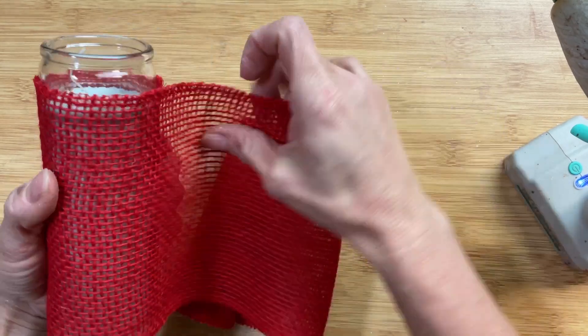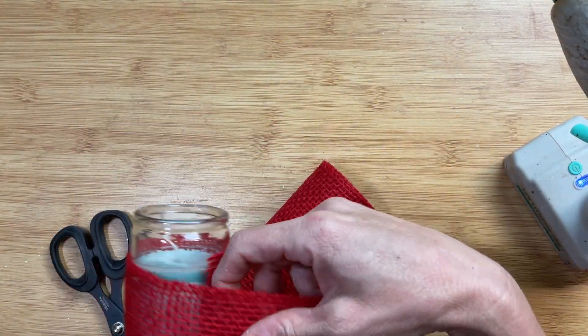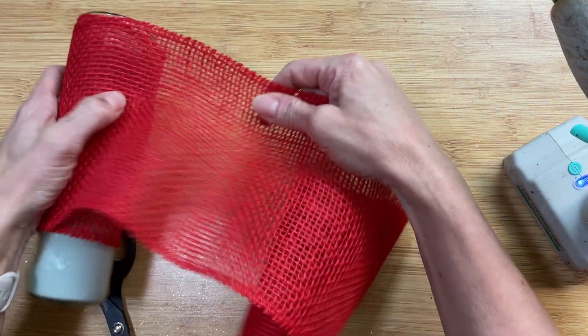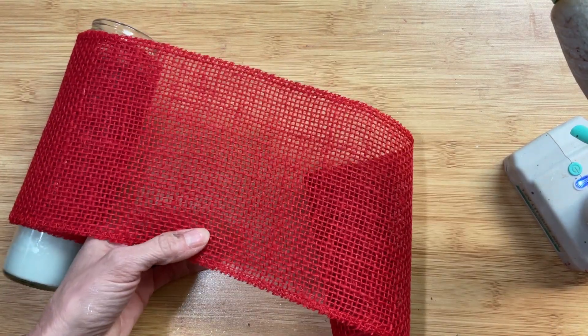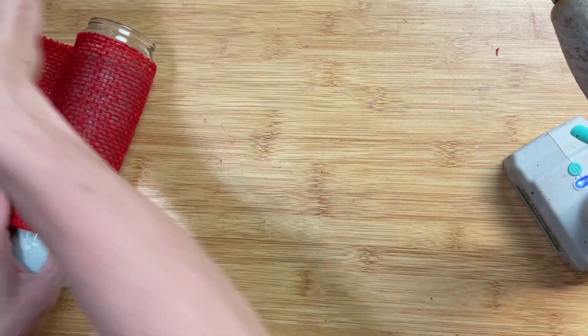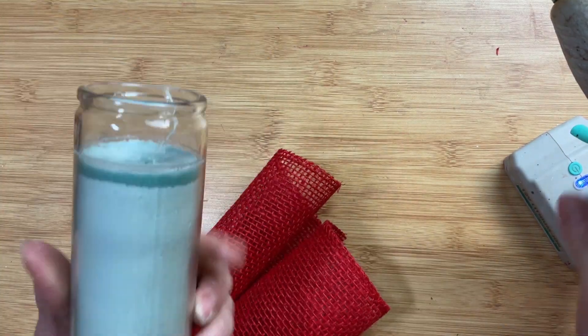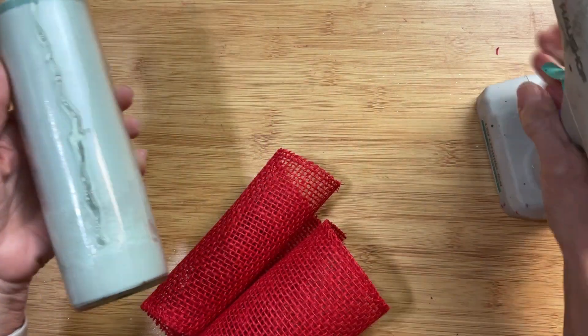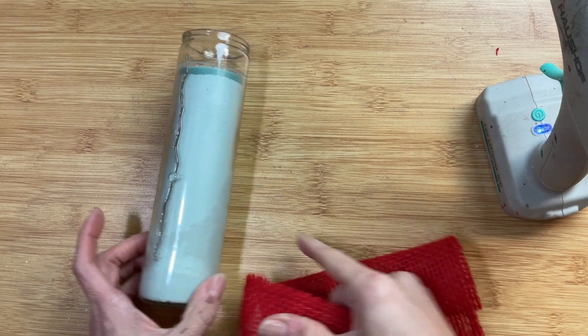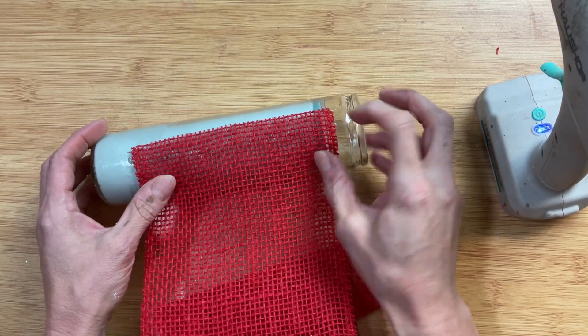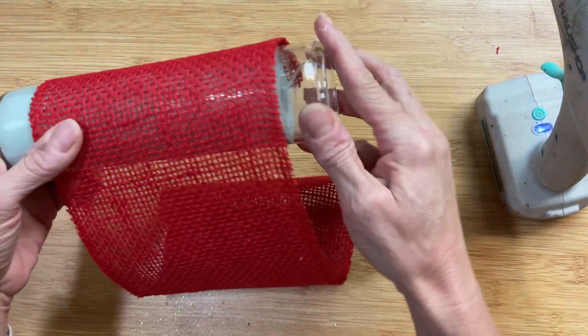While that is drying I'm going to take my pillar candle. All I had was a blue one so that is one of the reasons I decided to wrap it in this red burlap ribbon. If you have a red candle or a white candle you don't need to do this step but I actually like how it looks with the burlap ribbon. So just putting some hot glue I'm actually going to wrap my candle twice with this burlap ribbon to hide as much as possible the blue color.